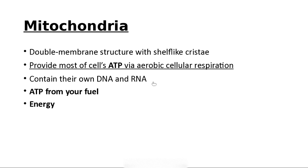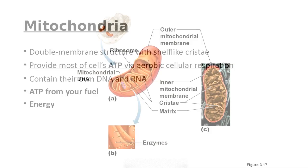Mitochondria also contain their own DNA and RNA. This DNA may have somewhat of an effect on our makeup, and most of the mitochondrial DNA we get will be from a maternal parent — the sperm doesn't really come along with its own mitochondria.